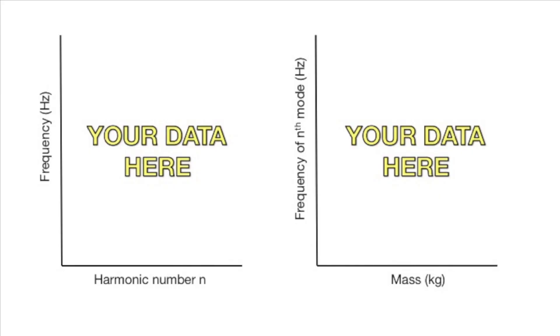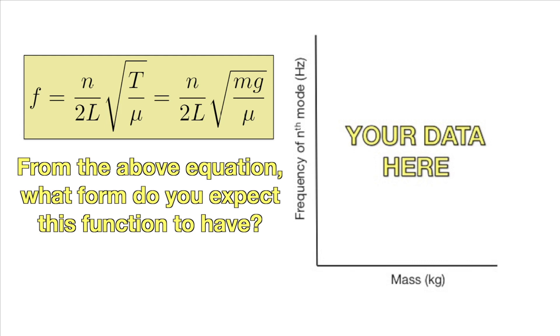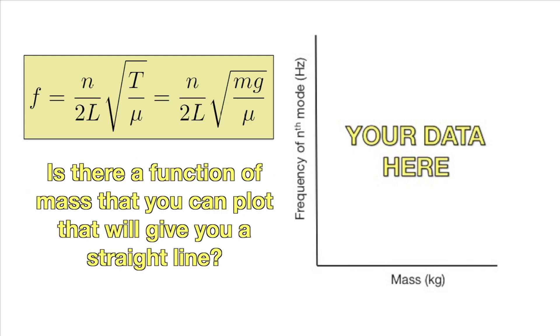Once you have your measurements, make two plots: one of the harmonic number versus frequency and the other of the hanging mass versus frequency for a set harmonic. From the above equation, what form do you expect for a function of frequency versus mass? Is there a function of mass you can plot that will give you a straight line?